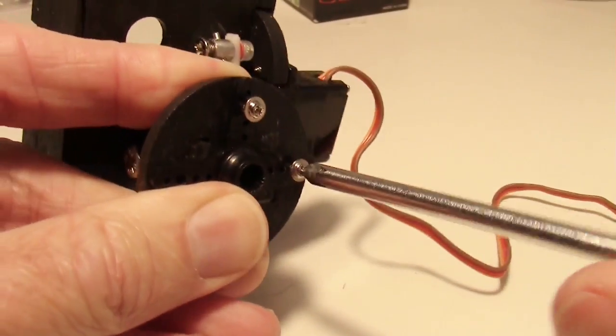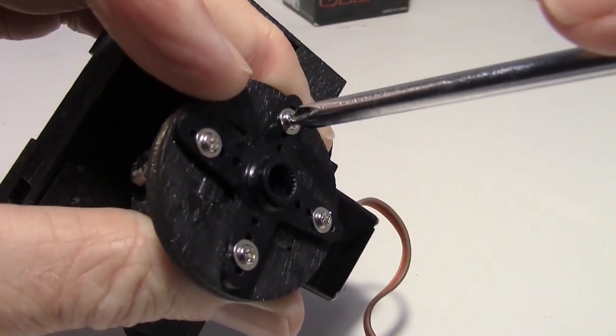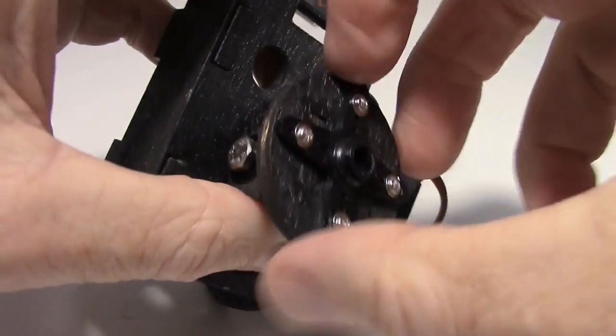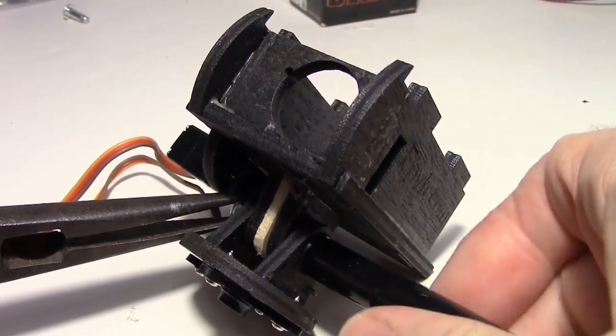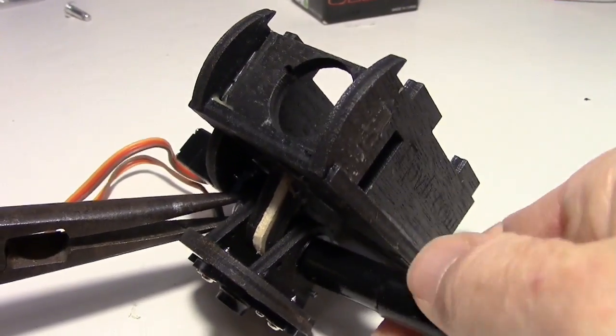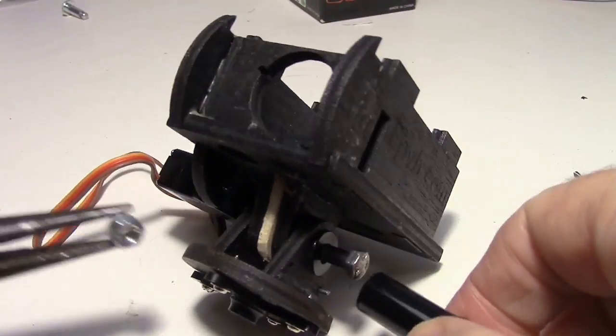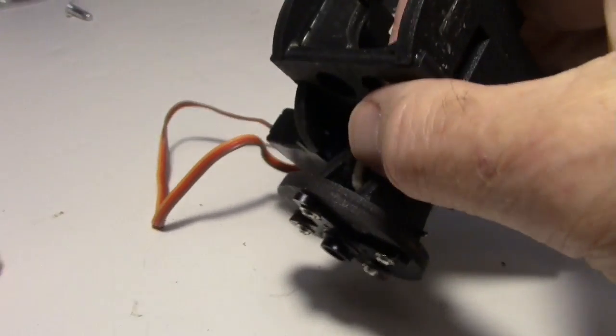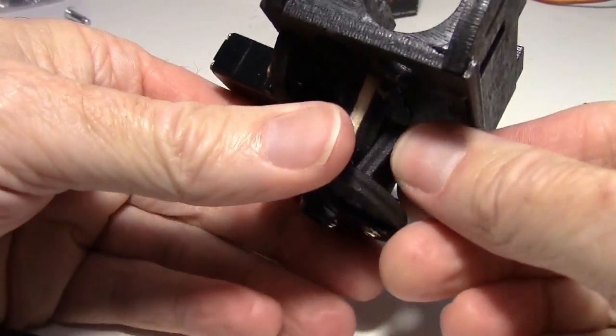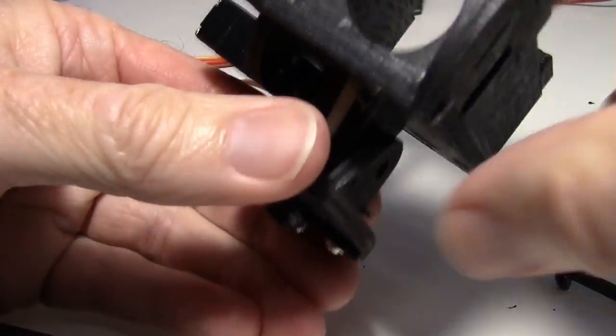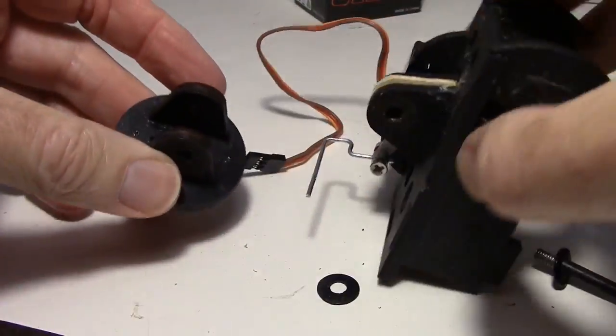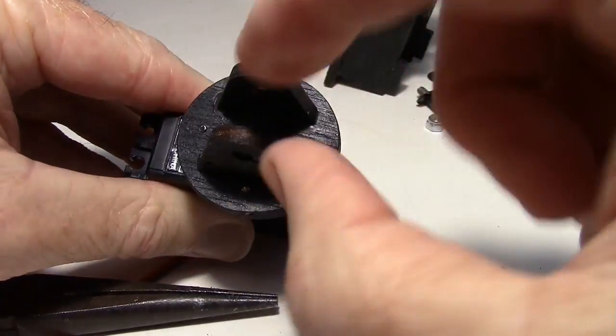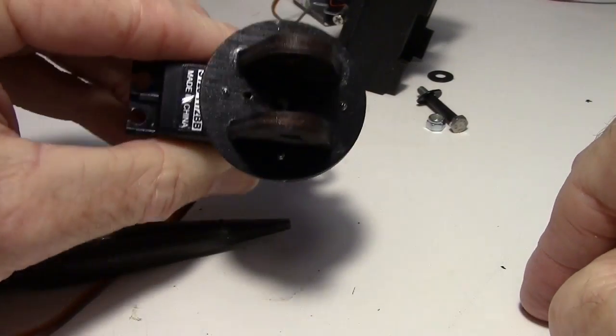Now removing the bolt so I can take the pan tilt apart and put the base onto the servo. Pull the bolt out. Slide this out. And then once I get this set where I want it, I'll put the screw down in that hole.